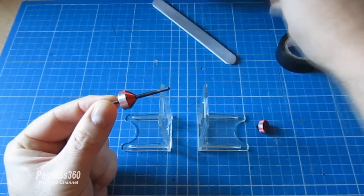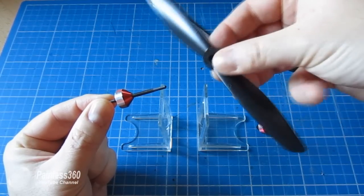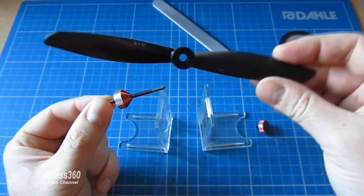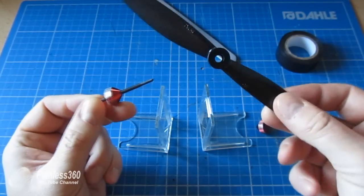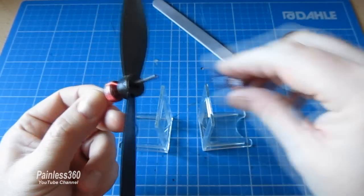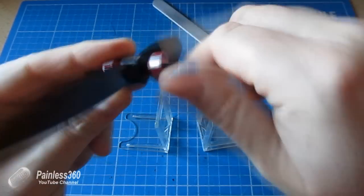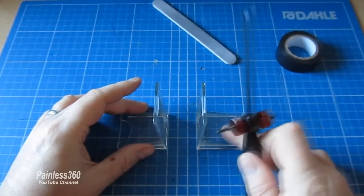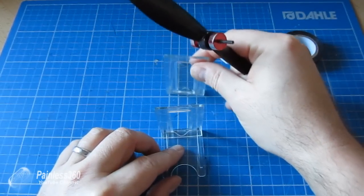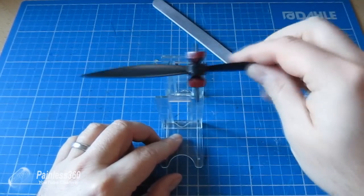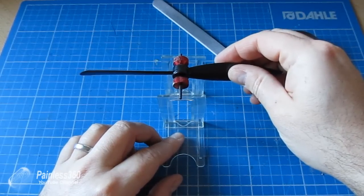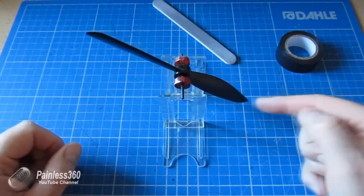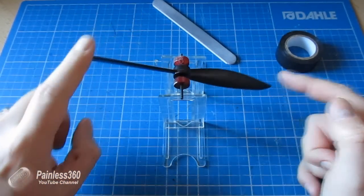So the first thing we'll do is we'll actually balance each of the props so that each of the props is actually the same weight, so it will sit level in the prop. So we'll pop it onto the device, make sure that it is level.